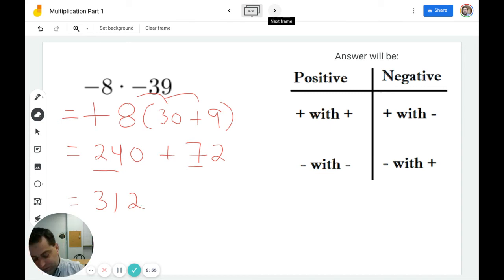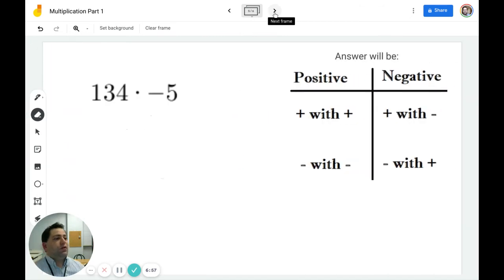Let's try another one. In this example, I have 134 times negative 5. I have a negative times a positive, so I know my answer is going to be negative. And then I'm going to rewrite 134 to be 100 plus 30 plus 4. And I'm going to multiply that grouping by 5.